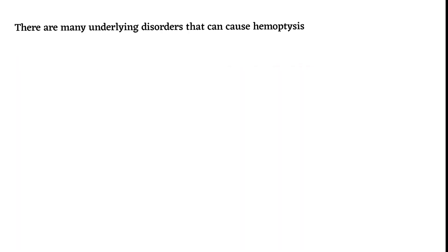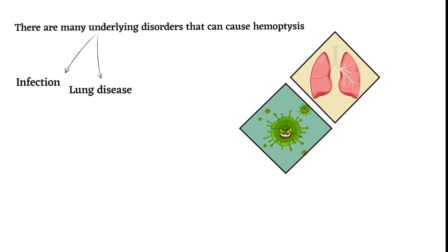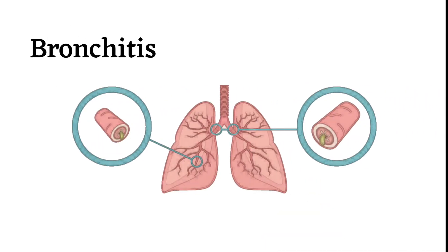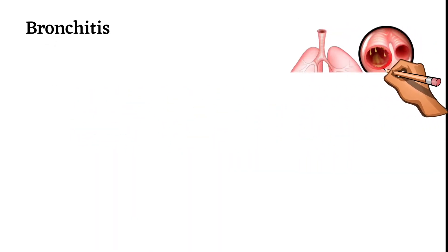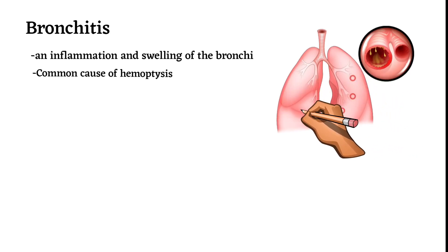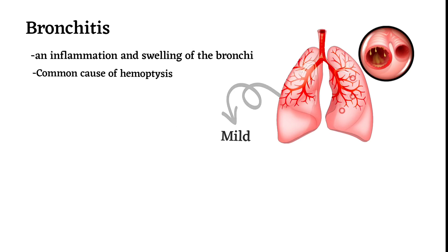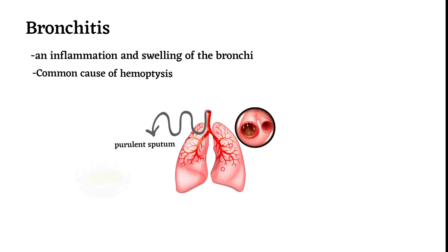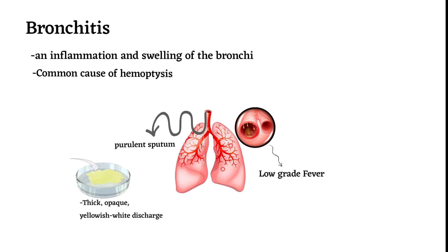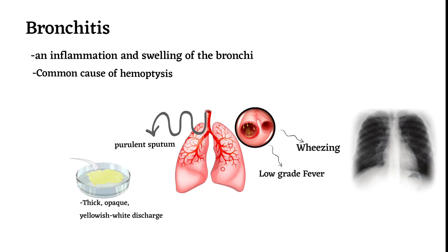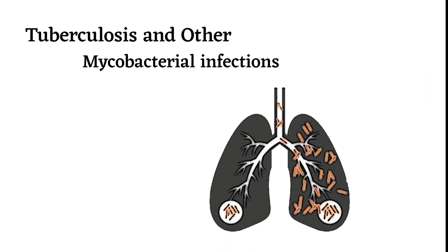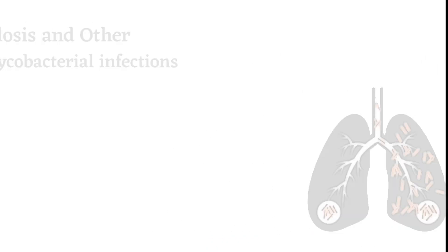There are many underlying disorders that can cause hemoptysis, ranging from infection to lung disease to trauma and heart problems. First, bronchitis: bronchitis is an inflammation and swelling of the bronchi. It is a common cause of hemoptysis that results from recurrent coughing that irritates and eventually breaks down the mucosal lining of the airways. The hemoptysis is usually mild and often associated with recurrent sputum — thick, opaque, yellowish-white discharge — low-grade fever, and occasionally wheezing. A chest X-ray is usually normal.